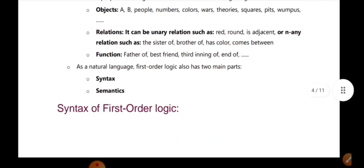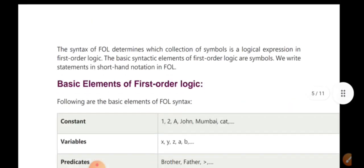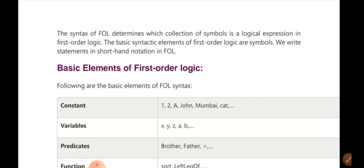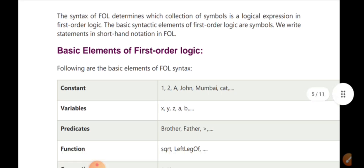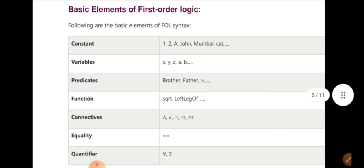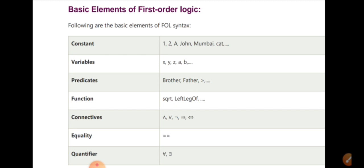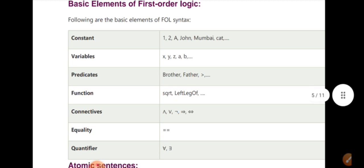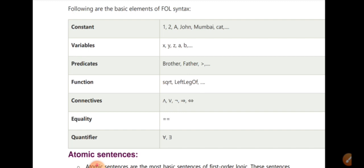First order logic has a syntax and semantics. The syntax is a collection of symbols we can use to build expressions. FOL uses basic elements including constants such as numbers and alphabets, variables, predicates such as Father, Brother, Mother, Greater than, functions such as Square and Power, connectives such as And, Or, and Implies, equality, and quantifiers such as For All.